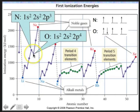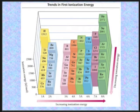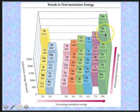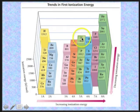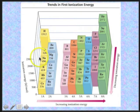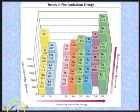Here's another depiction of ionization energy trends. As you move across a period, ionization energy generally increases to a maximum at the noble gases. There are the hiccups at nitrogen/oxygen and beryllium/boron, but in general, ionization energy increases going across, and this holds true for each period in the periodic table.